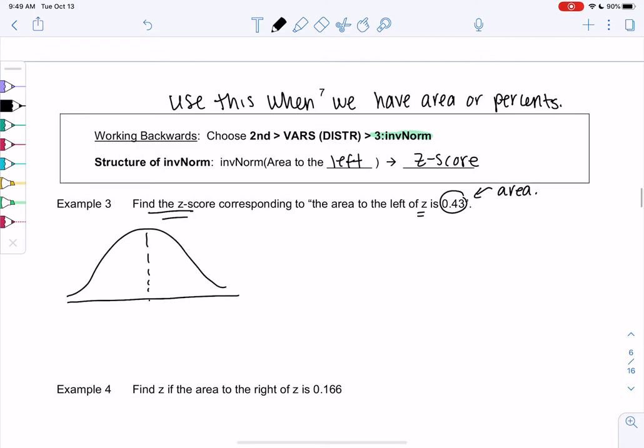So we'll put 0 in the middle. 0 actually represents 50-50, because it cuts it in half. So I know that the z-score is a little bit over here, because it's only 0.43 and not 50%. So the z is unknown. The area is 0.43.